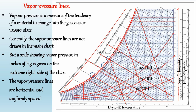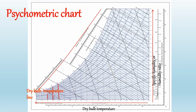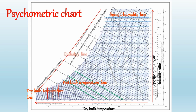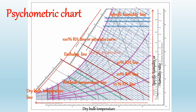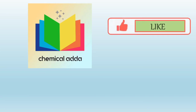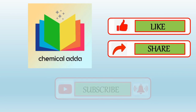So that's all about the lines in the psychometric chart. Let's recall all these lines once again. Hence, that's all about the psychometric chart. In the next part of this video, we will see examples based on the psychometric chart, so keep watching. If you like this video, please like, share with your friends, and subscribe to my channel.